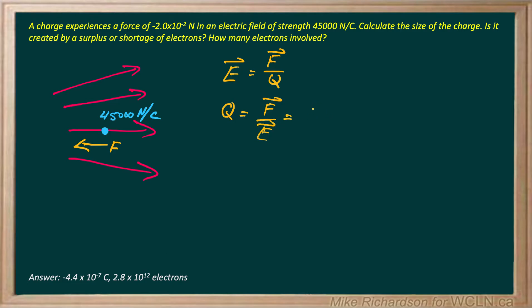Now my force was negative 2 times 10 to the negative 2 Newtons, and my electric field was positive 45,000 Newtons per Coulomb. That will give me a charge of negative 4.4 times 10 to the negative 7 Coulombs.